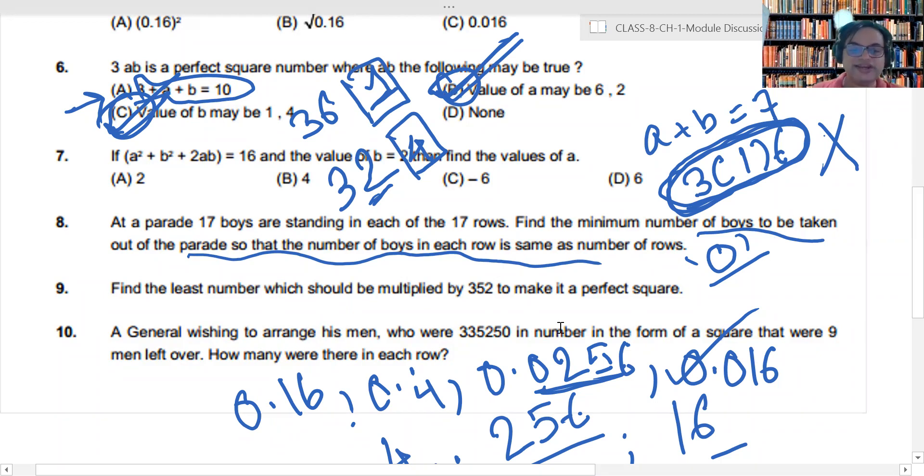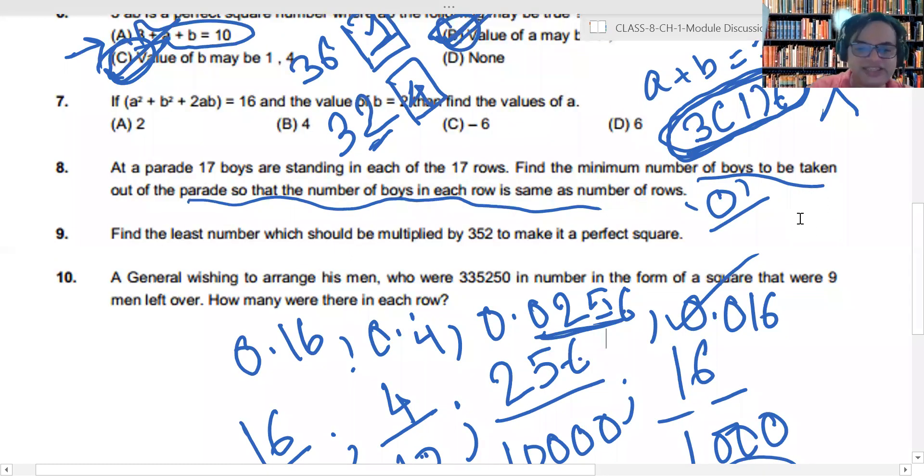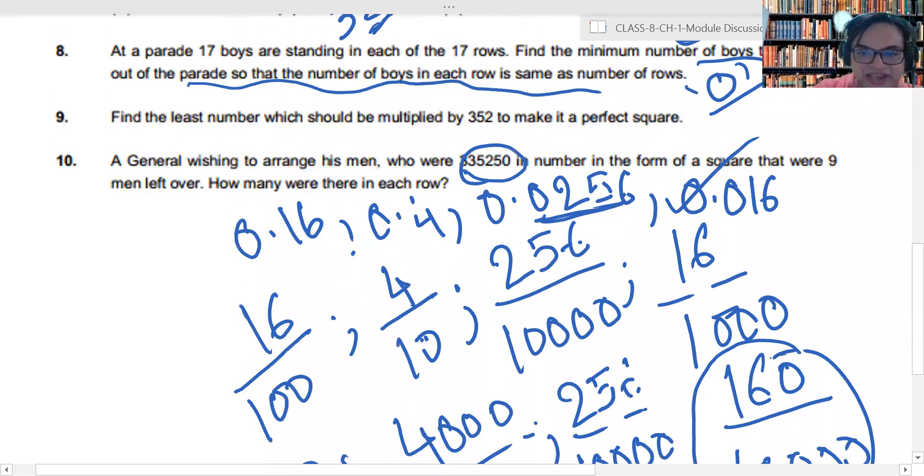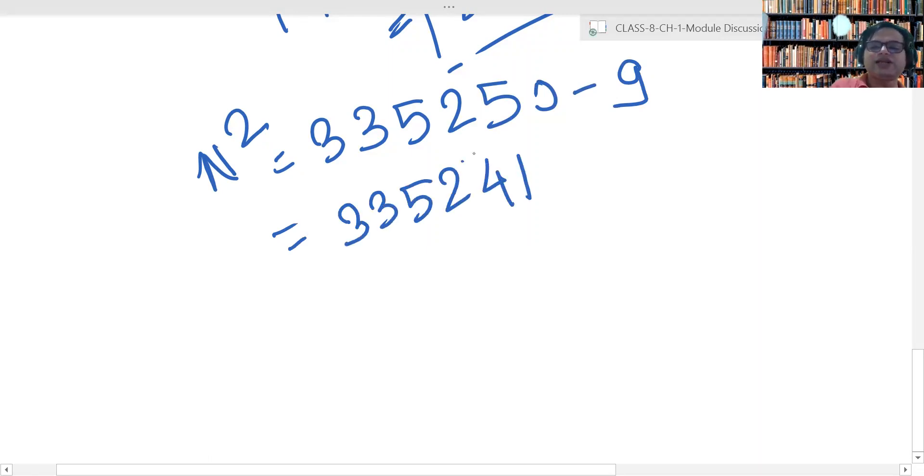Next question. A general wishing to arrange his men who were 335250 in number in the form of a square, there were nine men left over. How many men are there in each row? So, the correct answer is, 335250 minus nine, then I will get a perfect square. Basically, it will be 335241, now this number is a perfect square.